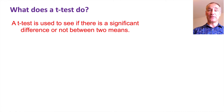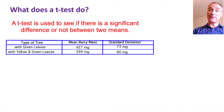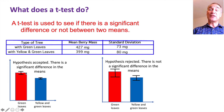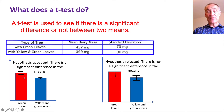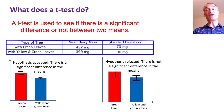A t-test is used to see if there's a significant difference or not between two means. For example, last week we had green berries and plants with yellow and green berries, measuring the mean mass of berries. Using bar charts, if there's a clear difference between the standard deviation for the green leaves and the yellow leaves, there should be a significant difference in the means. If the standard deviation bars overlap, you can say there is no significant difference.